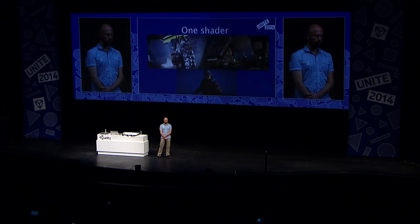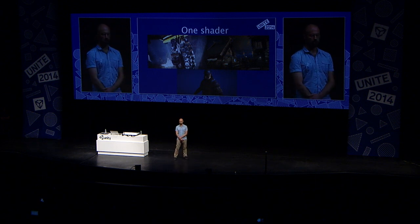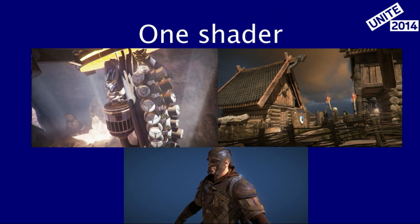In Unity 5 we have one single physically-based shader. It's called the Standard Shader. Underneath that shader we actually have a multitude of variations of smaller shaders — different versions for mobiles, for high-ends, and all that. You can see some screenshots here. It's all done with a single shader. Different environments — you can see what a wide range of materials the shader can cover.